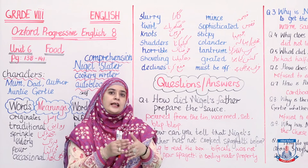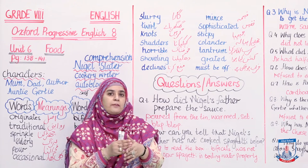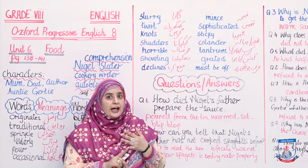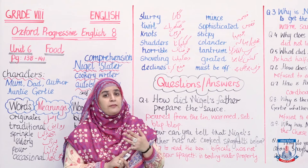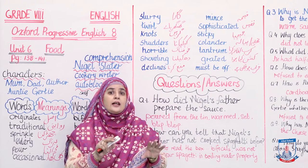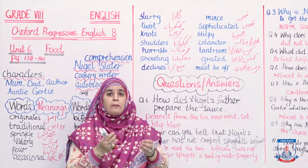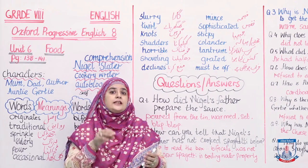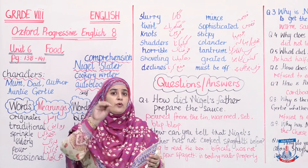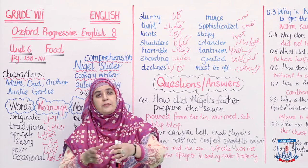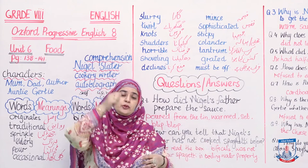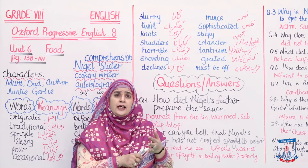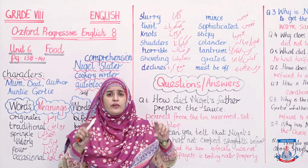Ab mein aapko is comprehension ko thoda sa recap kar doon. In the beginning of the comprehension, dad is actually making a pasta - spaghetti bolognese. He has poured the sauce out and the sauce lay in a saucepan, hot, blipping, blopping at times and waiting to be poured on the spaghetti. He is actually trying to boil the spaghetti, which he is unable to do so because it is the first time. Wo spaghetti boil karne ki kooshish karte hai - kabhi spaghetti idhar chali jaati hai, kabhi udhar. Us experience ko jo mum aur jo Nigel share kar rahe hain, us ke andar jo unki comments hoti hain, wo bade beautifully describe kiye wye hain is comprehension mein.